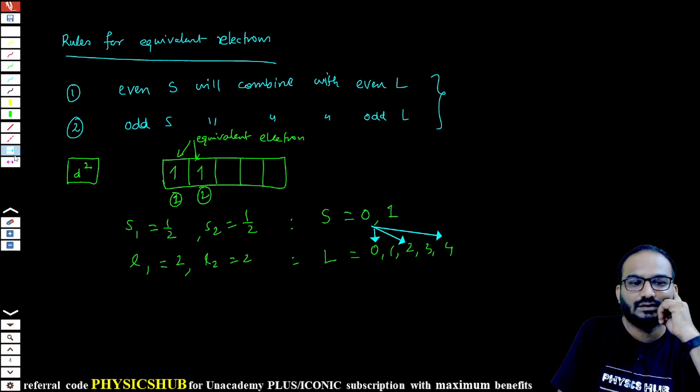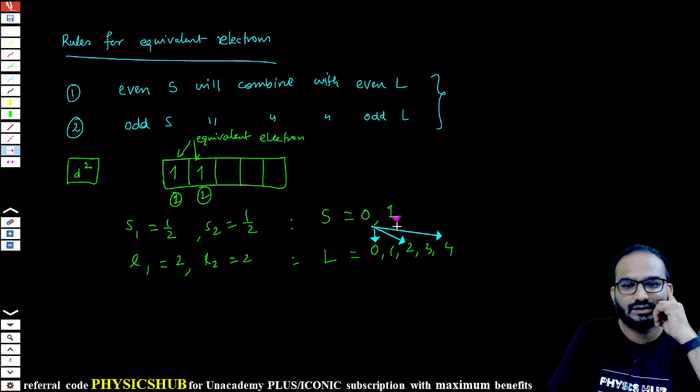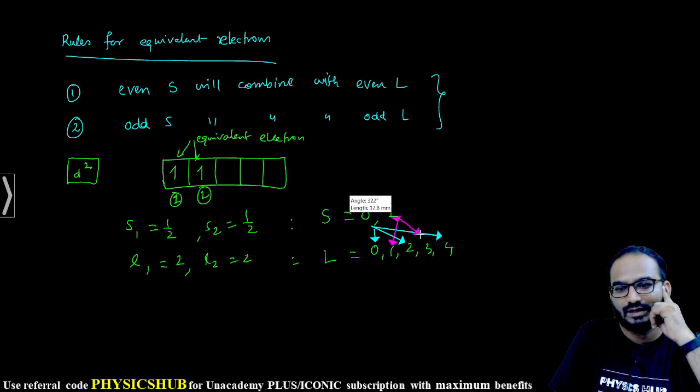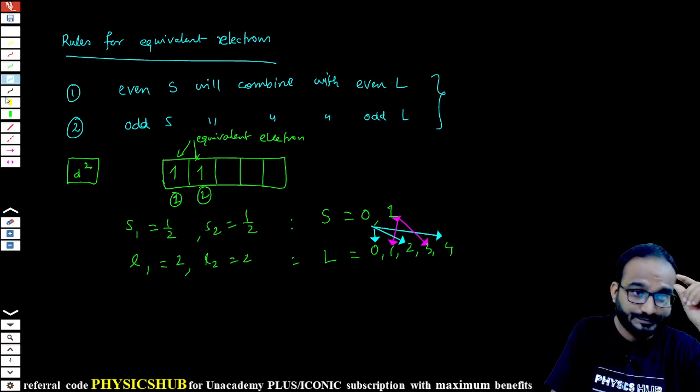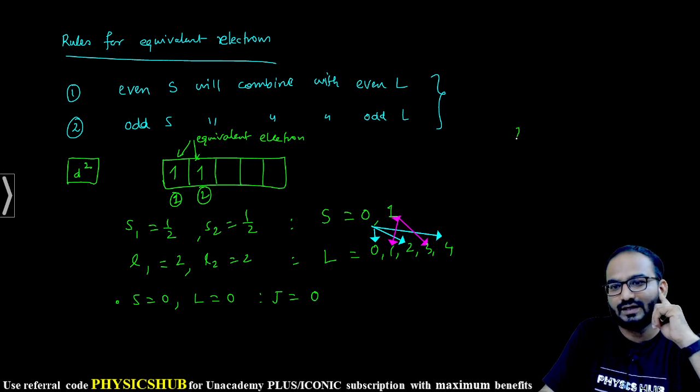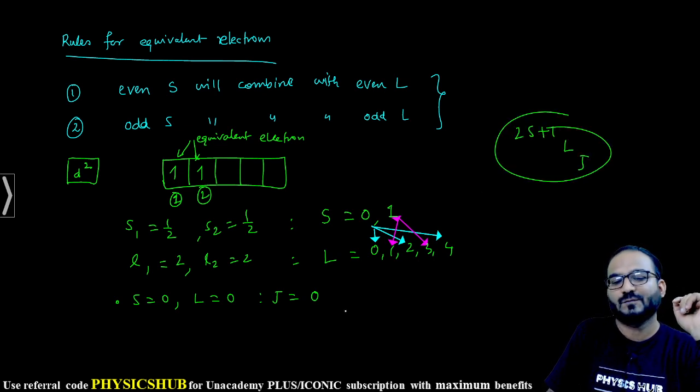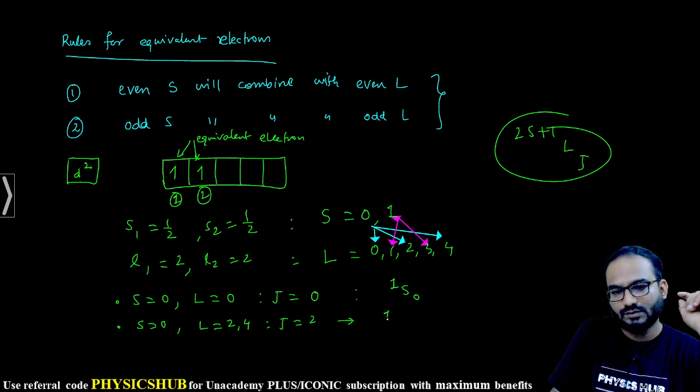In contrast, if we consider S=1, this will contribute with 1 and 3. Let us go for this: S=0 will combine with L=0, that will give rise to J=0. The corresponding level is 2S+1 LJ, so this will be ¹S₀. Next, S=0 will combine with L=2 and 4. That will give rise to J=2 and the corresponding term will be ¹D₂, and J=4 will give rise to ¹G₄.